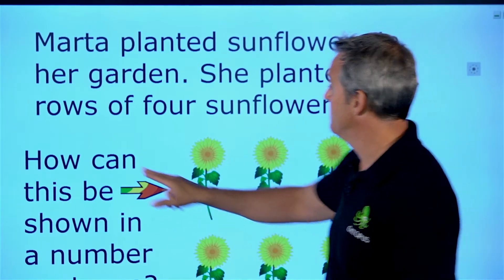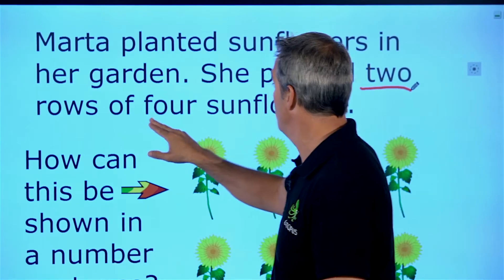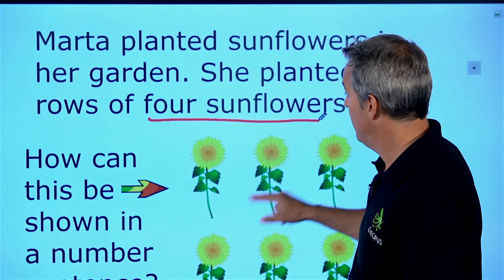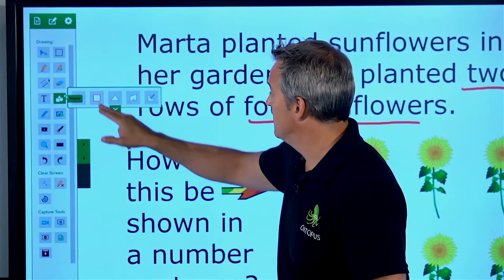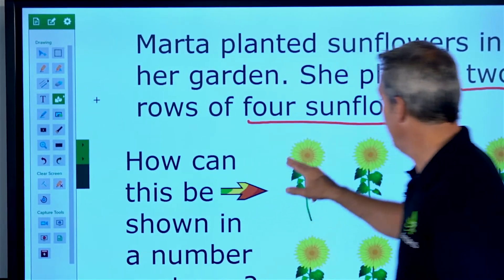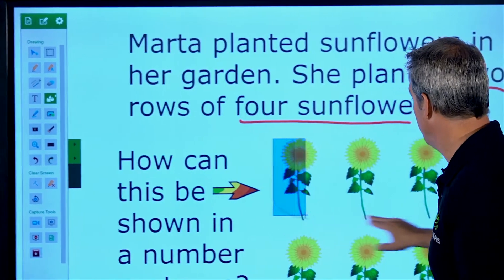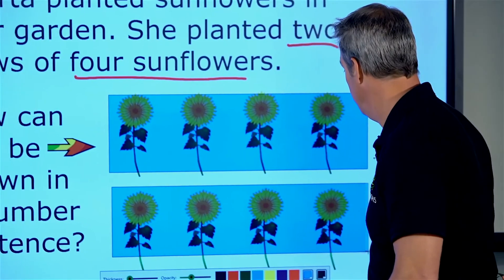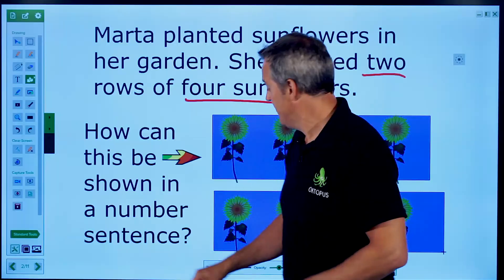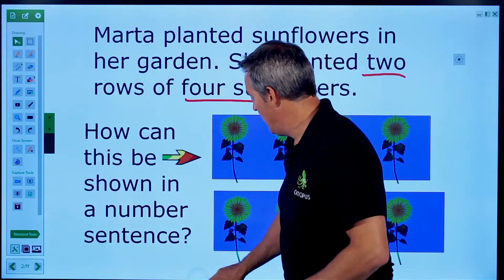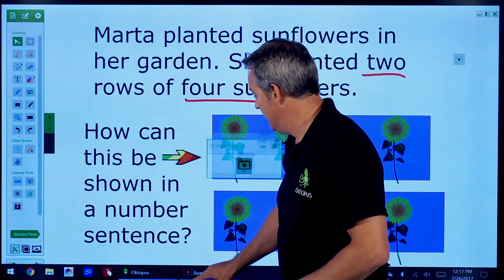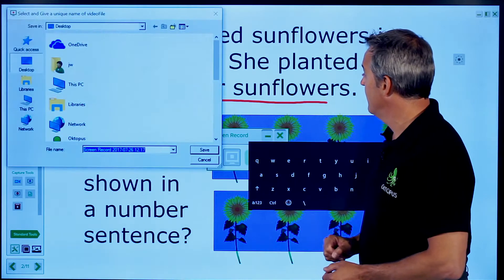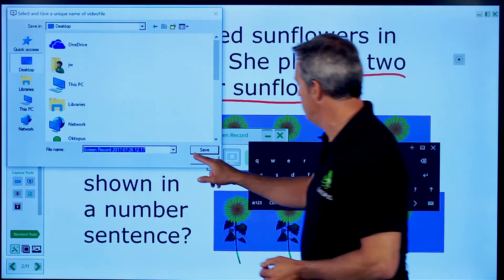We're talking about she's planting two rows of four sunflowers, and we might highlight those different options there. What is it that we're looking at? There's one row. There's another row. And while I'm doing that, it can record what I'm doing. So we're going to go and save this video.